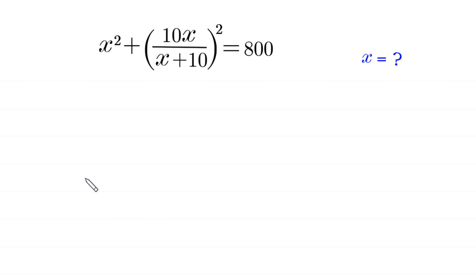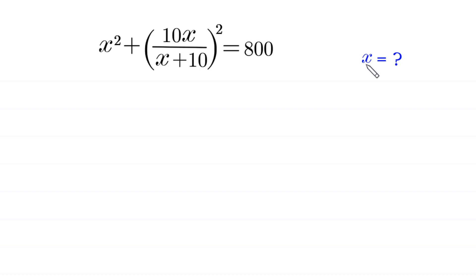Hello, welcome to how to solve this very nice algebra equation. x squared plus 10x over x plus 10, whole squared, is equal to 800. We need to find all possible values of x.